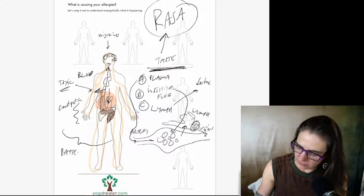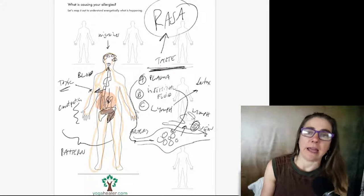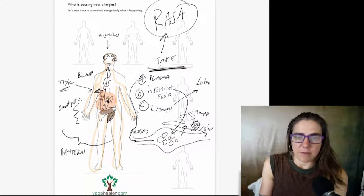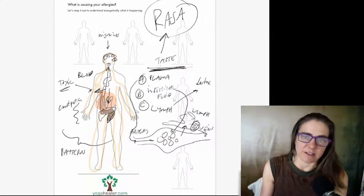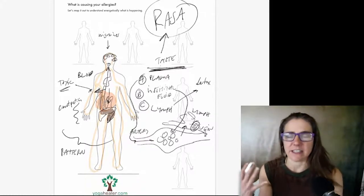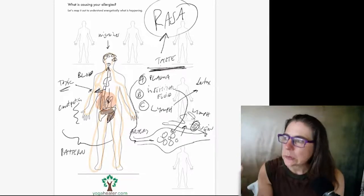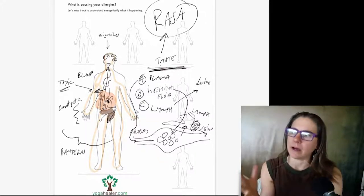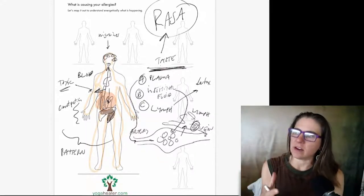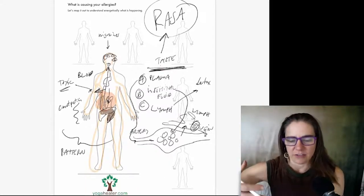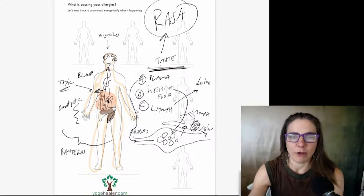If you compact this pattern, if you see this as a pattern, this is a constipation pattern over time. What happens is you end up with chronic symptoms. For me, the beginning part of my chronic symptoms first was constipation, second was migraines, and then third was allergies.